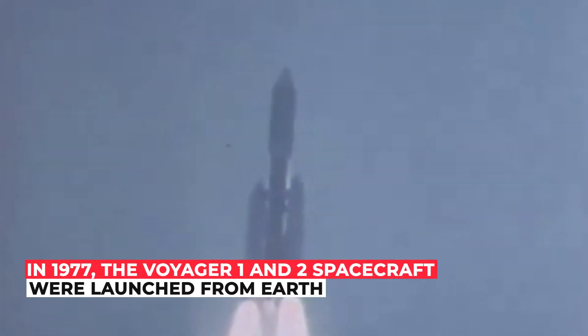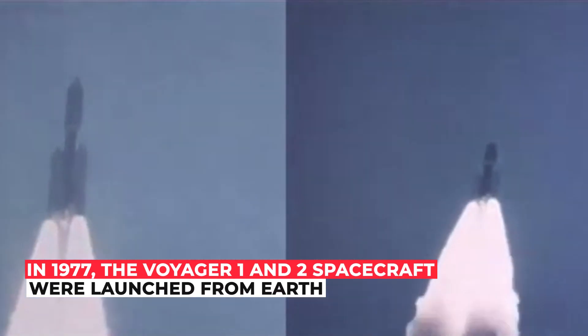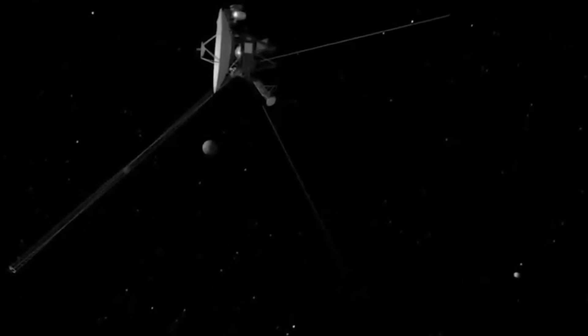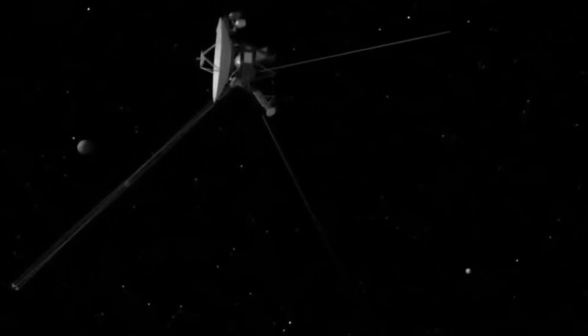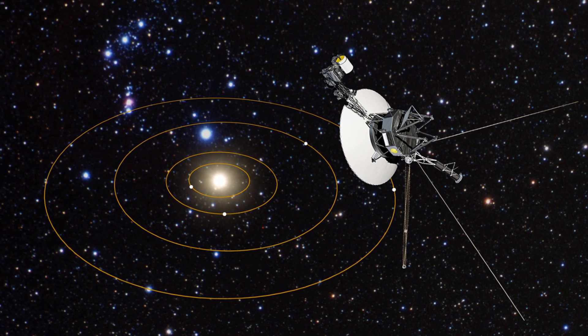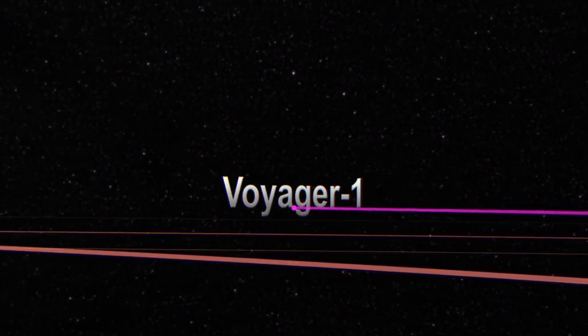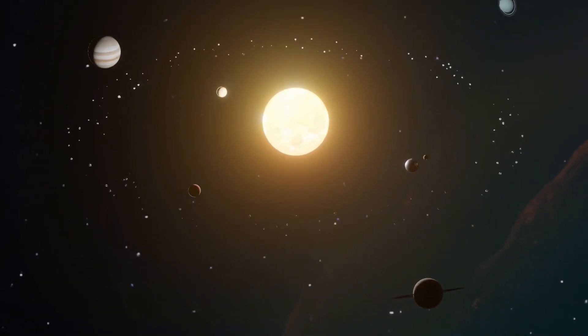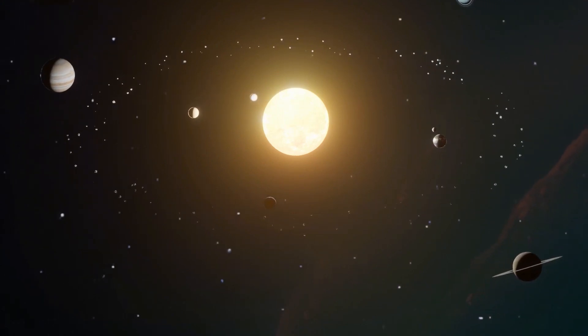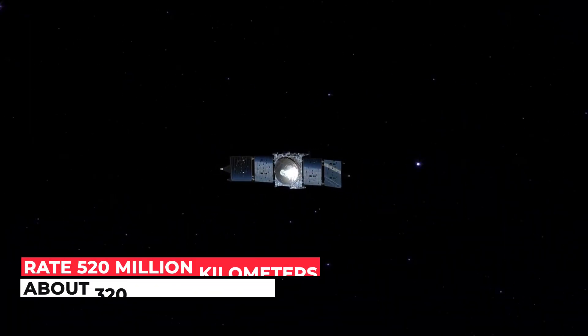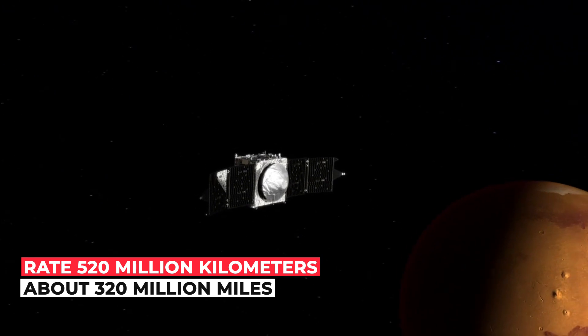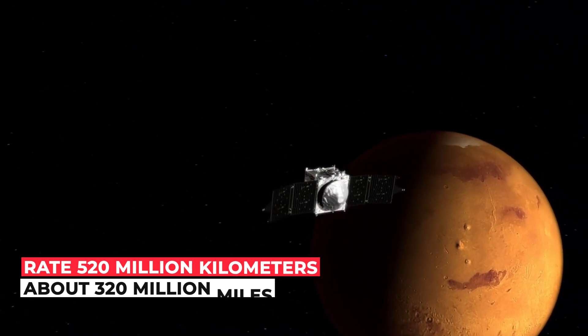In 1977, the Voyager 1 and 2 spacecraft were launched from Earth. Voyager 1 was introduced on September 5, 1977 and completed flybys of Jupiter and Saturn. The spacecraft is now rising above the ecliptic plane, the plane in which most planets orbit the Sun, at an angle of about 35 degrees per year at a rate of about 520 million kilometers or about 320 million miles.